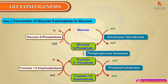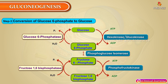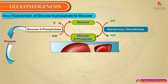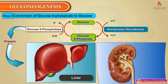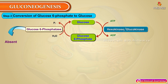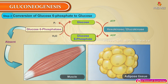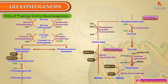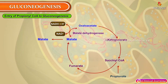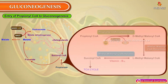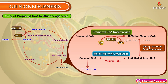Bypass reaction 3: conversion of glucose 6-phosphate to glucose is catalyzed by glucose 6-phosphatase. This enzyme is present in liver and kidney but absent in muscle and adipose tissue.